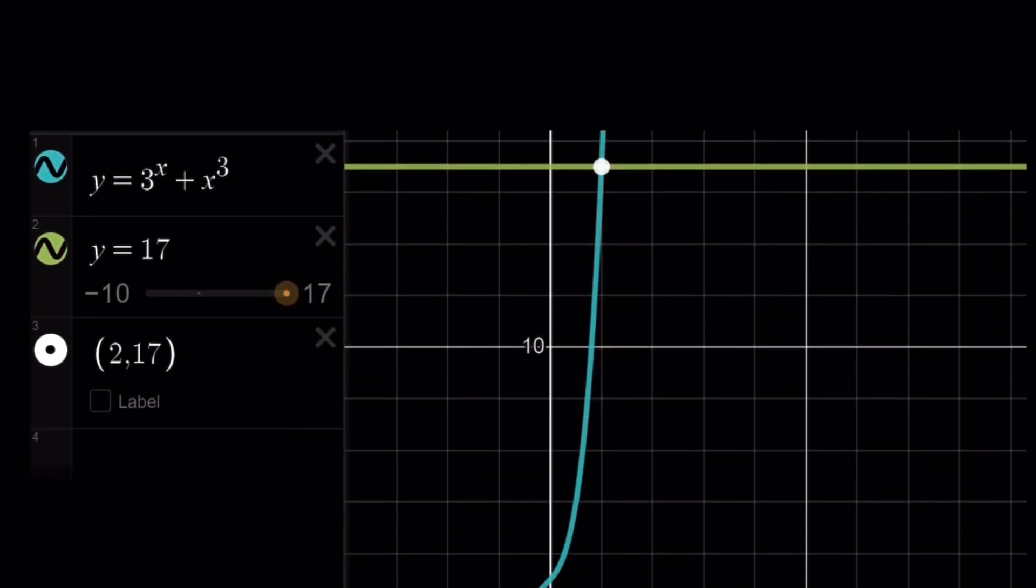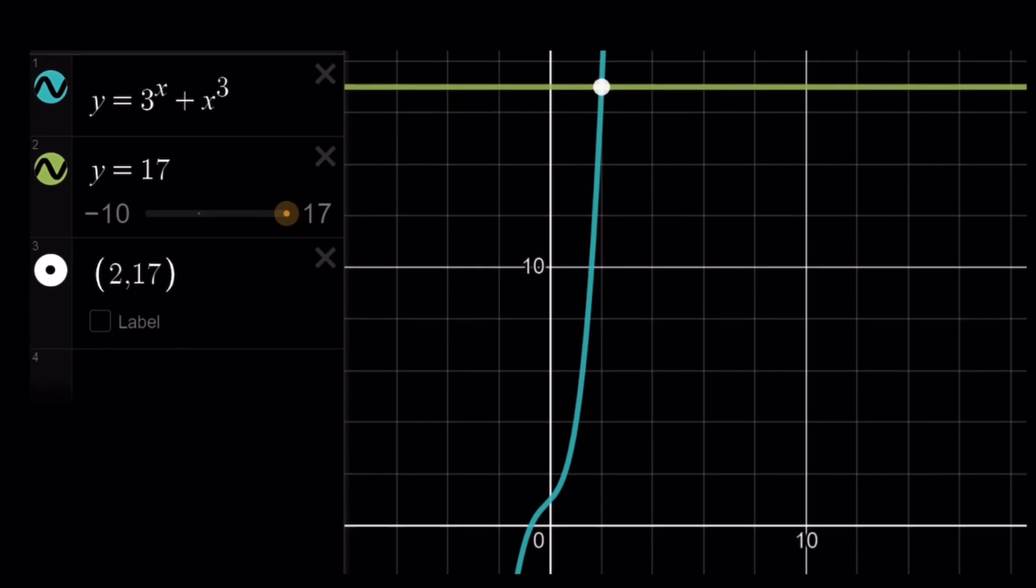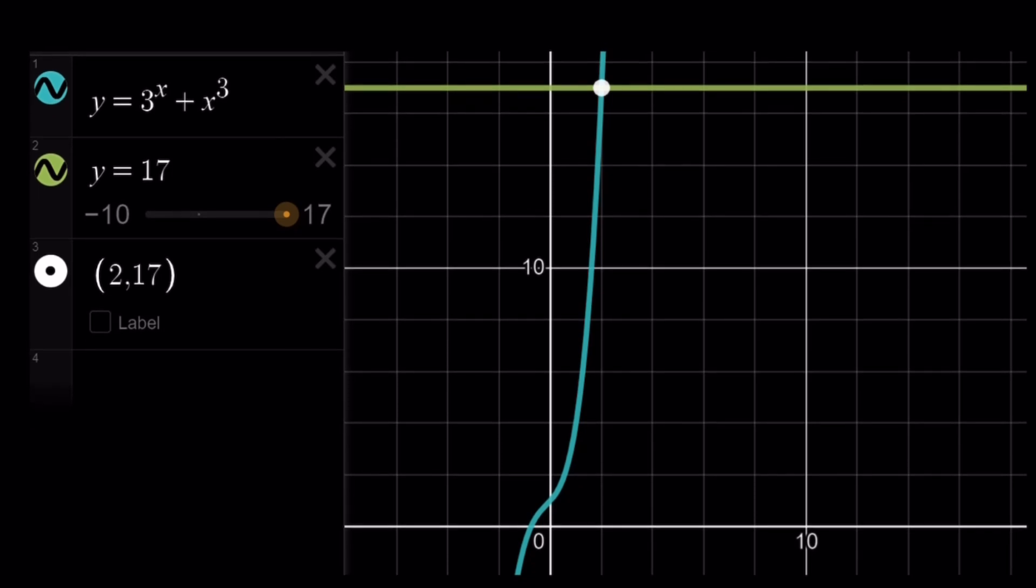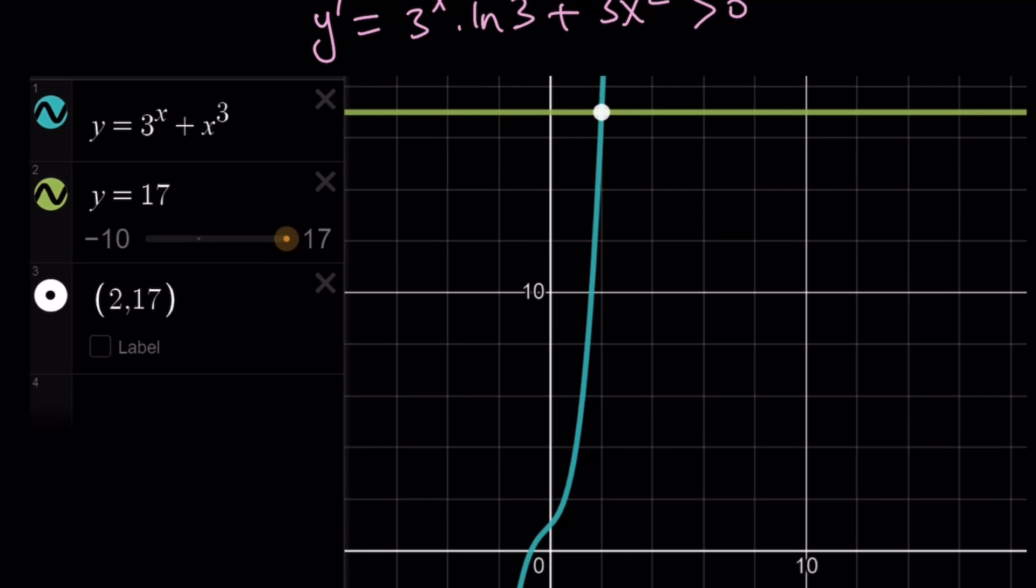Now, another way to approach this problem is looking at the original equation as a function, 3 to the x plus x to the third. If you go ahead and differentiate that, you're going to notice that this quantity is always positive, which means y, in this case, whatever the function is, is always increasing, and it's going to intersect a horizontal line at exactly one point, which is 2, 17, which means x equals 2 again.